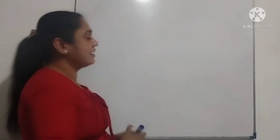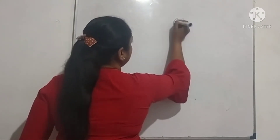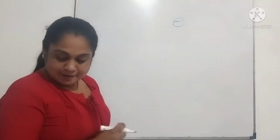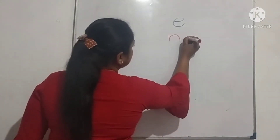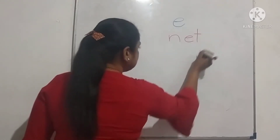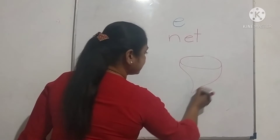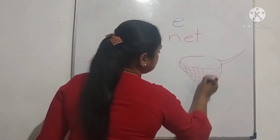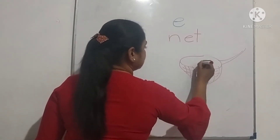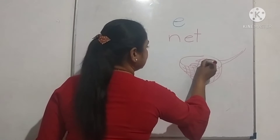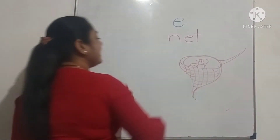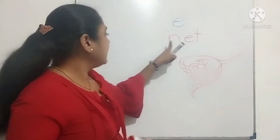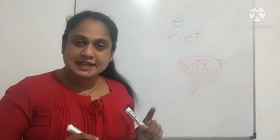These are the words. We can use the vowel E. Right? One more. N, E, T — Net. N, E, T — Net. Net. N, E, T — Net. N, E, T — Net. Net. Do you understand? Right. Next one.